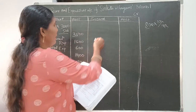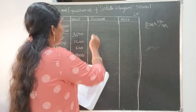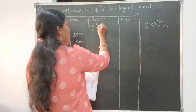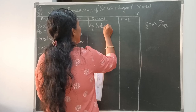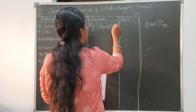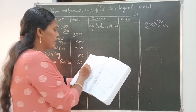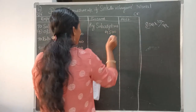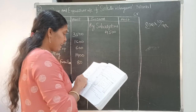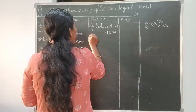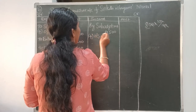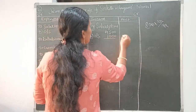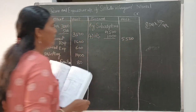Coming to the income side. We will start with subscriptions — in the income and expenditure account, subscriptions always come first on the income side. Three-year subscriptions are given, but we only consider the current year, which is 4500. Outstanding subscriptions for the current year are 1000, so we add that. Total subscriptions are 5500.